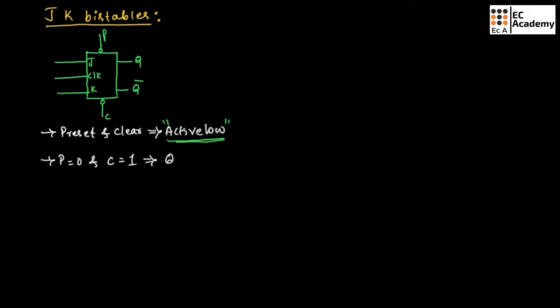And when preset is 1 and clear is 0, output Q will be equal to 1. Since clear is 1, clear which means output should be 0.